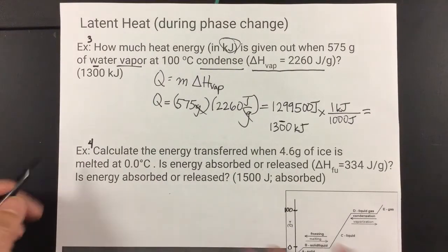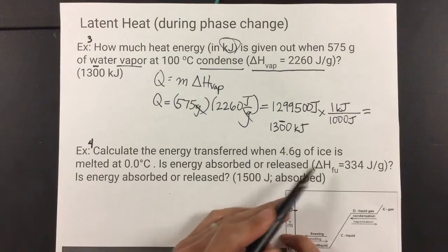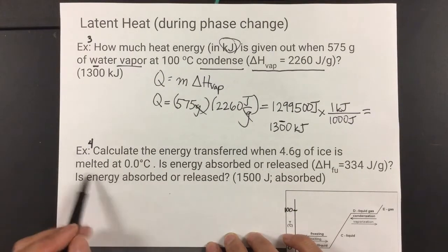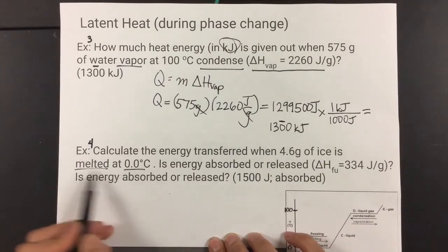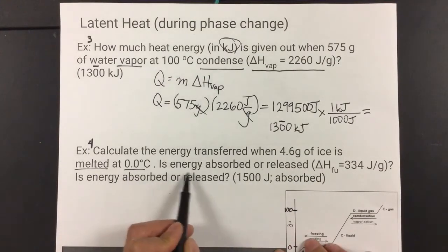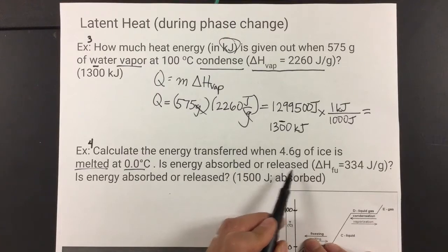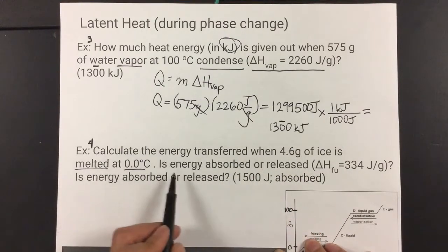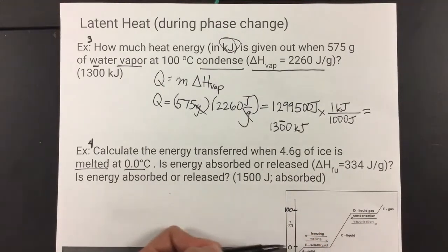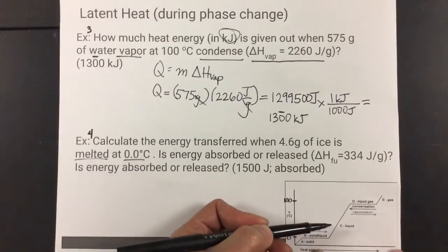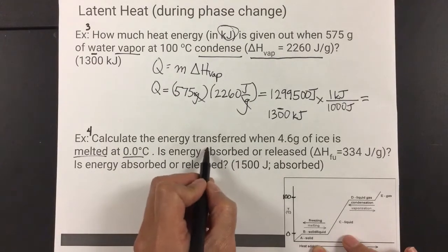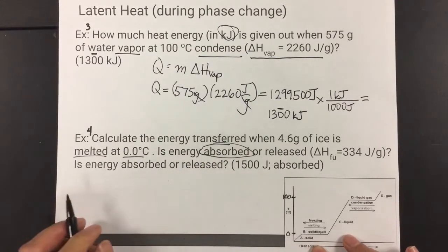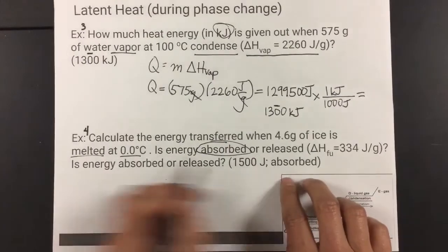So, the last problem. Calculate the energy transferred when 4.6 grams of ice is melted. That's a very good hint. And, it's at zero. So, ice, which is water, melts at zero. Is the energy absorbed or released? Okay, so you're taking ice and you're melting it. So, it's going this way. This way, on the heat curve of water. It's going this way. Endothermic or exothermic? Yes, you're right. It's endothermic, which means heat is absorbed. So, the answer is absorbed. Okay, for that question.